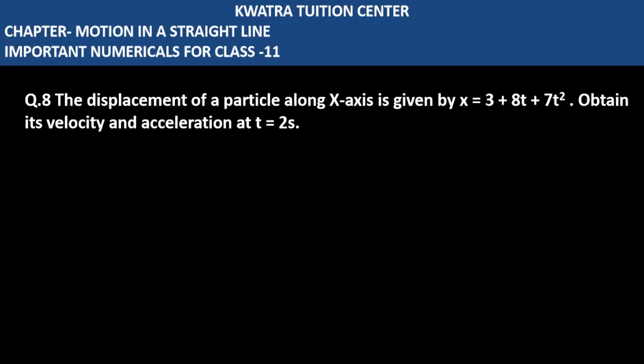Let's start with question number 8. It says the displacement of a particle along x-axis is given by x equals 3 plus 8t plus 7t square.